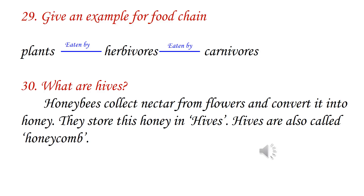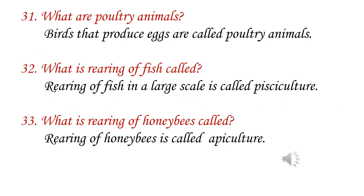What are hives? Honey bees collect nectar from flowers and convert it into honey. They store this honey in hives, which are also called honeycombs. What are poultry animals? Birds that produce eggs are called poultry animals. Rearing of fish on a large scale is called pisciculture. Rearing of honeybees is called apiculture.